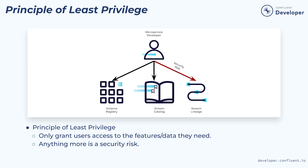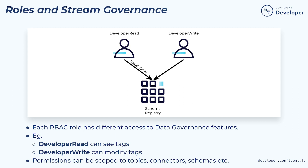It works for us in this limited educational environment because we want to learn all of the features, but we would want to be more restrictive in a production system. Each role defined in Confluent Cloud will have different access to the various data governance features, depending on what that role might require. For example, a user with the developer read role would be able to see the tags on a schema, but wouldn't be able to modify them. To modify the tags, they would need the developer write role.